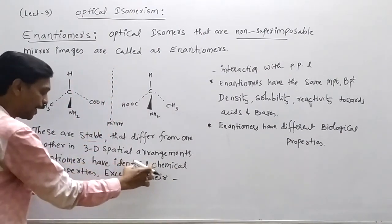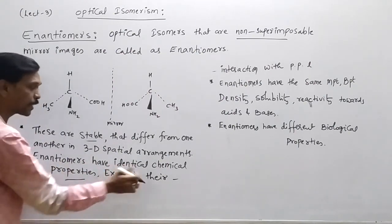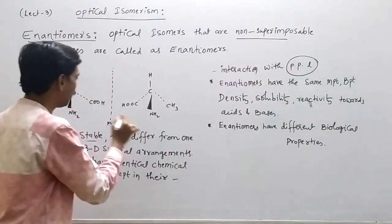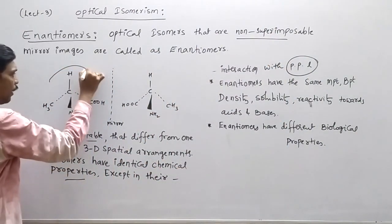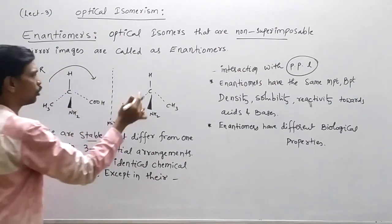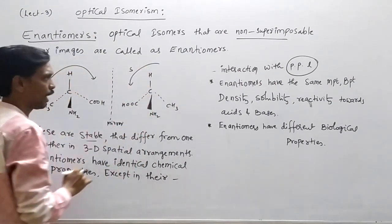Enantiomers have identical chemical properties except in their rotation of plane polarized light. If this compound is clockwise, then you can see it in the mirror as anti-clockwise.